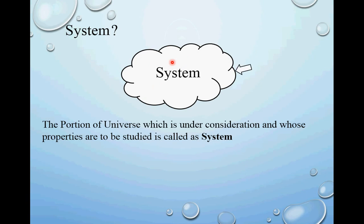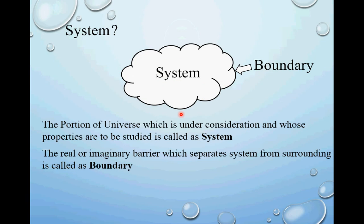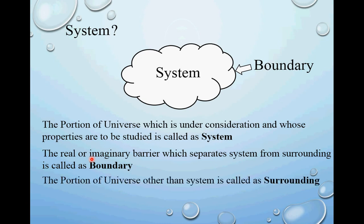The second term is boundary. This barrier which separates our area of interest from the remaining universe is called the boundary. As per definition, the real or imaginary barrier which separates a system from its surroundings is called a boundary. It may be noted that a boundary may be real or imaginary. The portion of the universe other than the system is called the surroundings — everything except the system is surroundings.